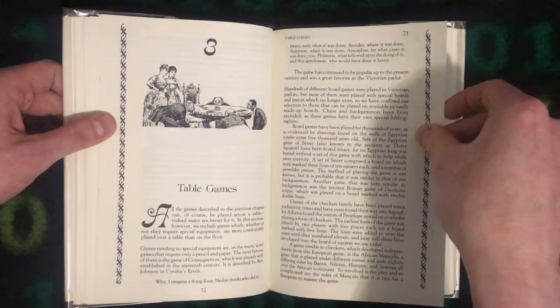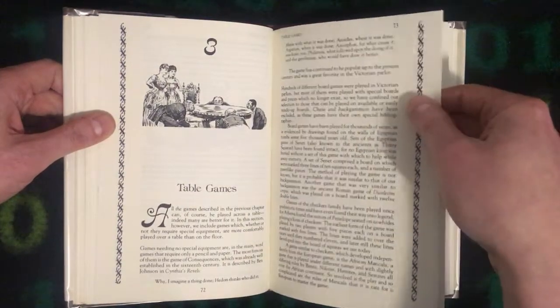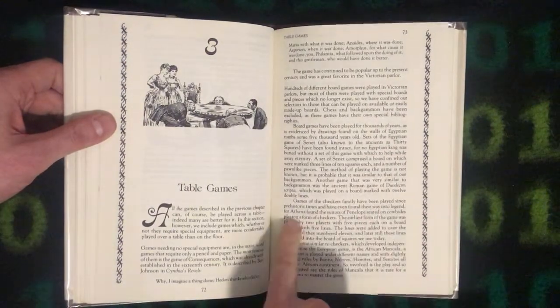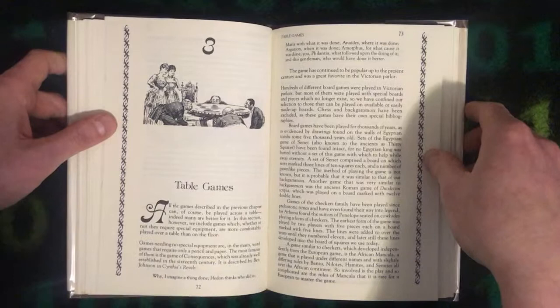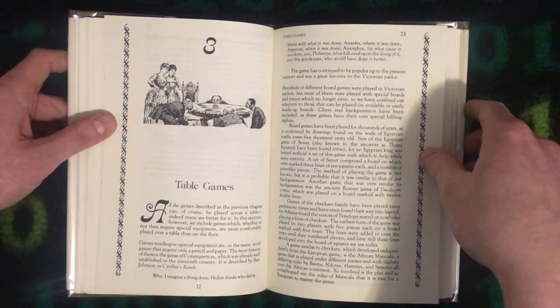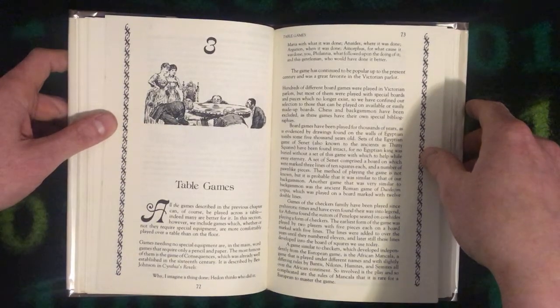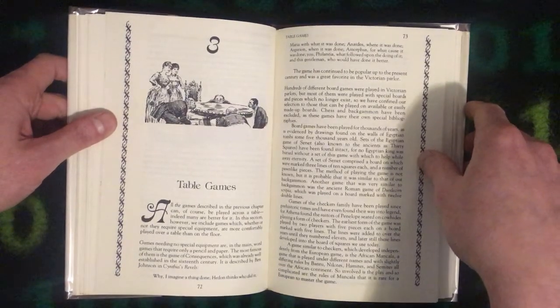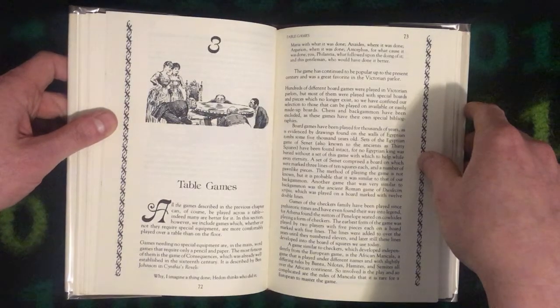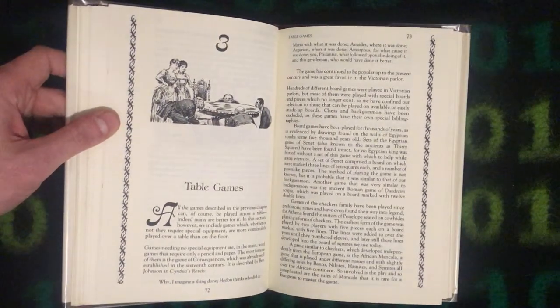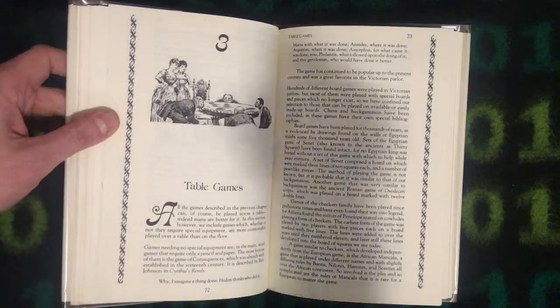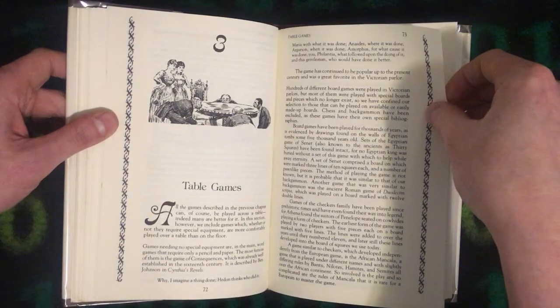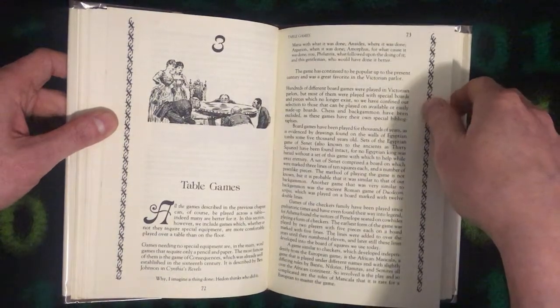Board games have been played for thousands of years. Games of the Checkers family have been played since prehistoric times and have even found their way into legend. Athena found the suitors of Penelope seated on cow hides playing a form of checkers. The earliest form of the game was played by two players with five pieces each on a board marked with five lines. The lines were added to over the years until they numbered 11 and later still those lines developed into the board of squares we use today.